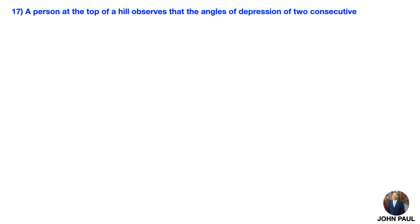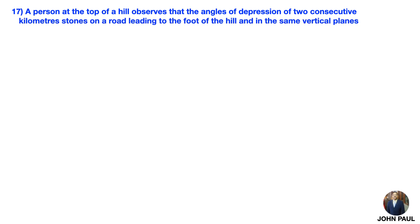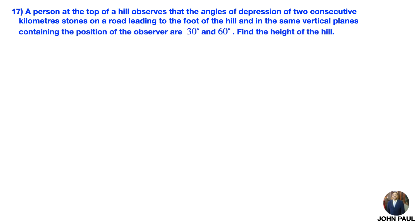A person on the top of a hill observed that the angle of depression of two consecutive kilometer stones on a road leading to the foot of the hill, and in the same vertical plane containing the position of the observer, are 30 degrees and 60 degrees. Find the height of the hill.